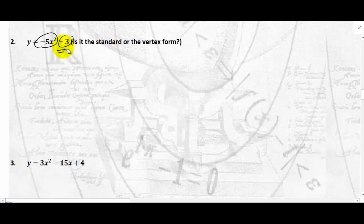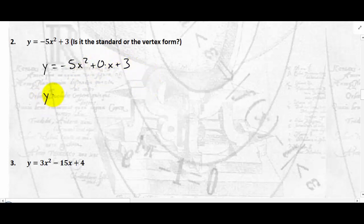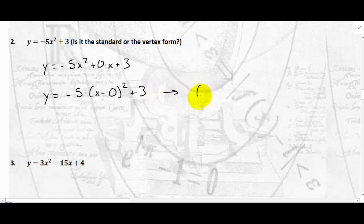Let's go over the first example. Please do example number 1; I'm going to do numbers 2 and 3. Example 2 is a particular kind of quadratic equation with no linear term — just a quadratic and a constant. In this case, y = −5x² + 3 is both standard form and vertex form: −5(x − 0)² + 3. The vertex is (0, 3) and the axis of symmetry is x = 0, the y-axis.